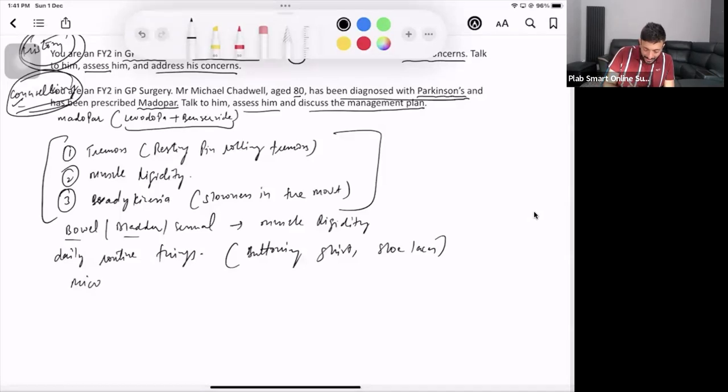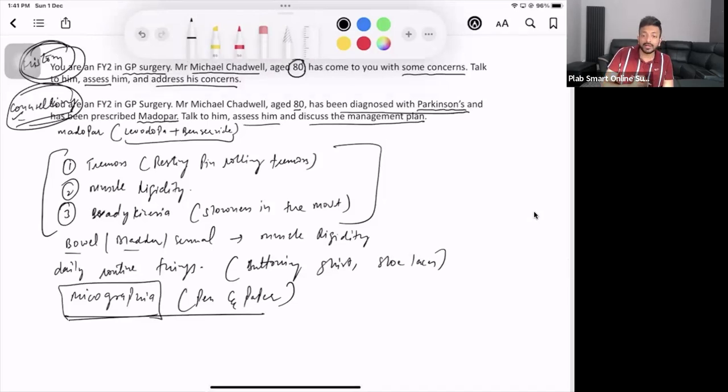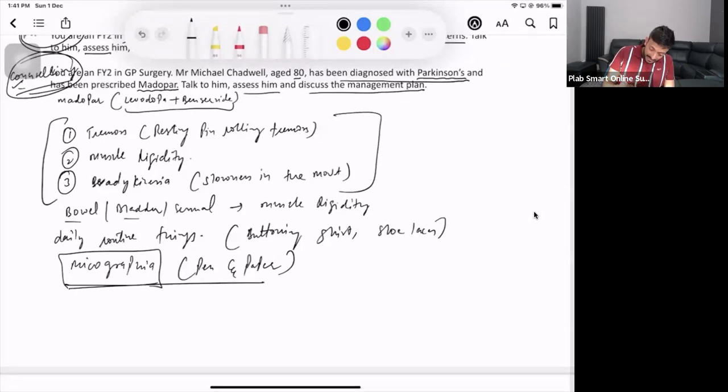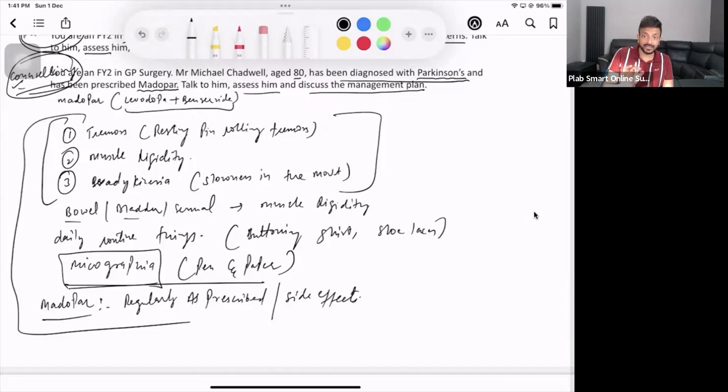These patients have got micrographia as well. So you may have a pen and paper as well. Make sure you use it and you tell the patient to write down something and they will be having micrographia. They will be writing very, very small. Then, as patient is taking the medicine, ask the compliance. If patient is taking this medication regularly as prescribed or not. If patient has got any side effects of the medication or not. So all these things you will be asking. That is going to be your history. Quick history, obviously.